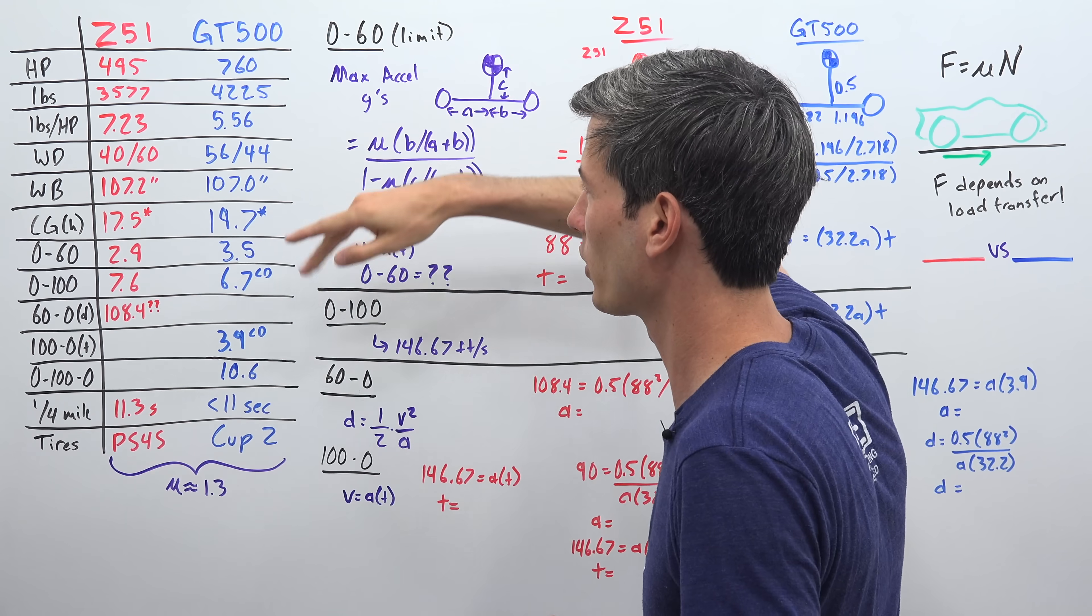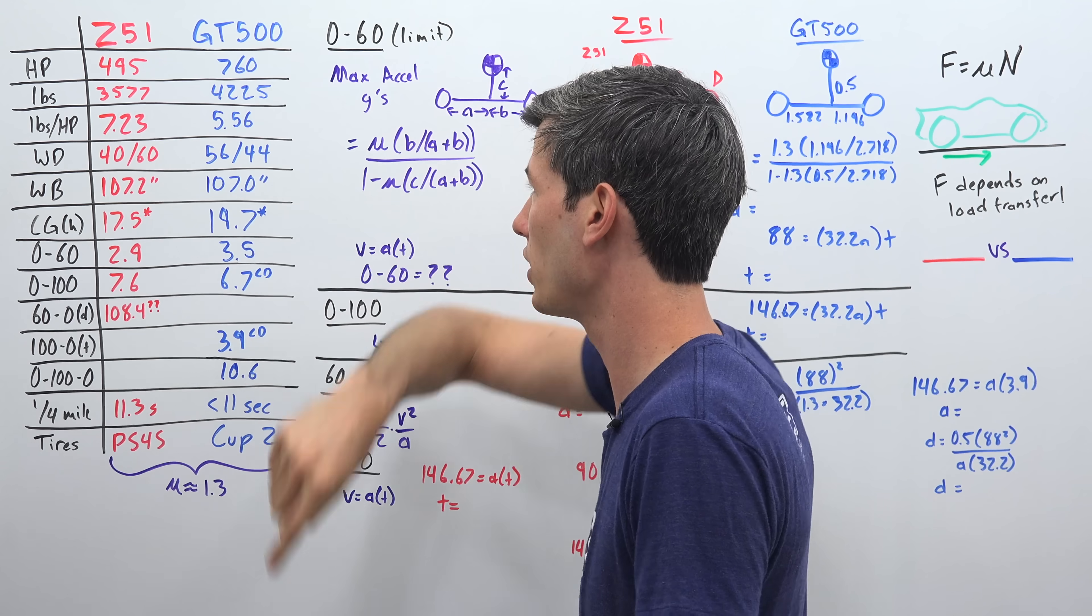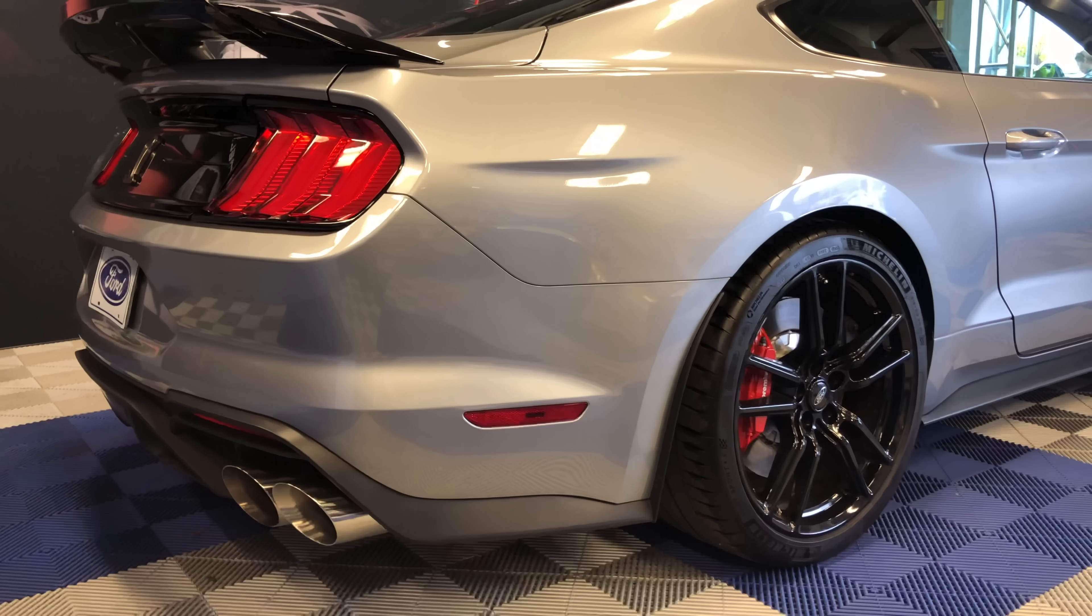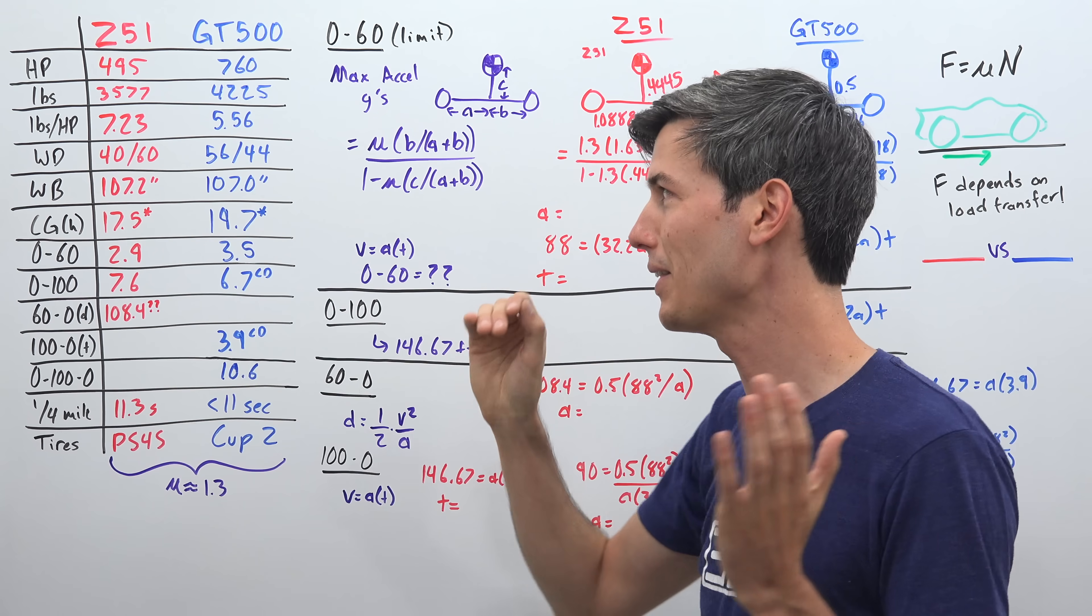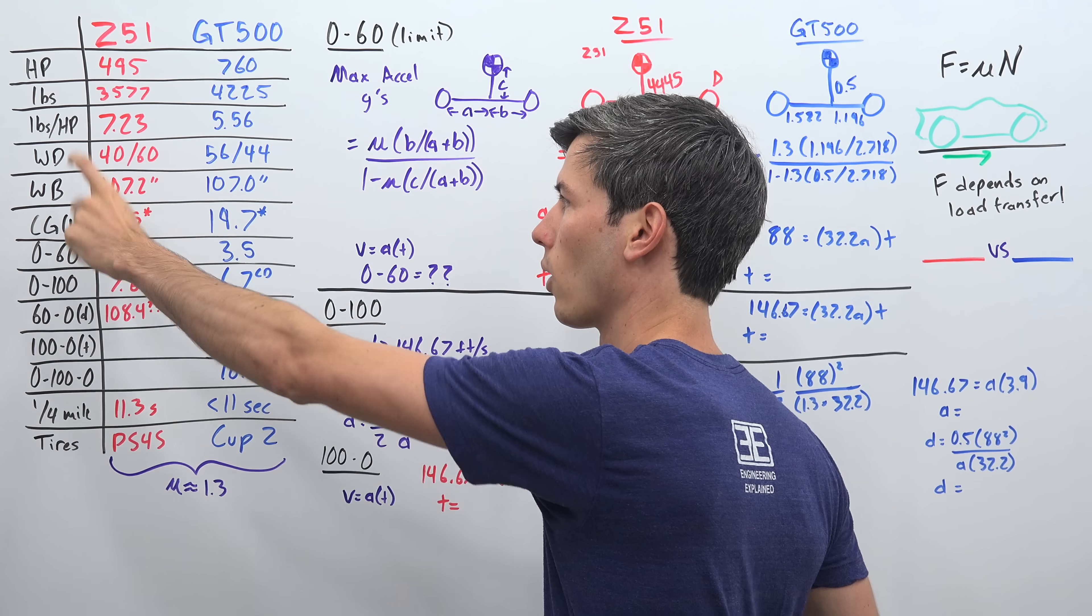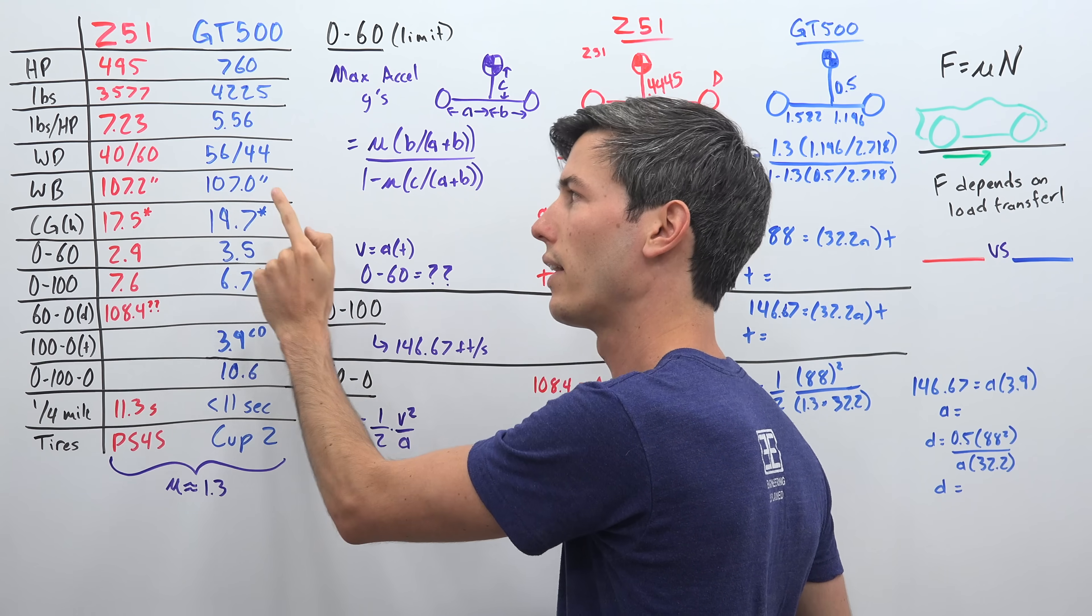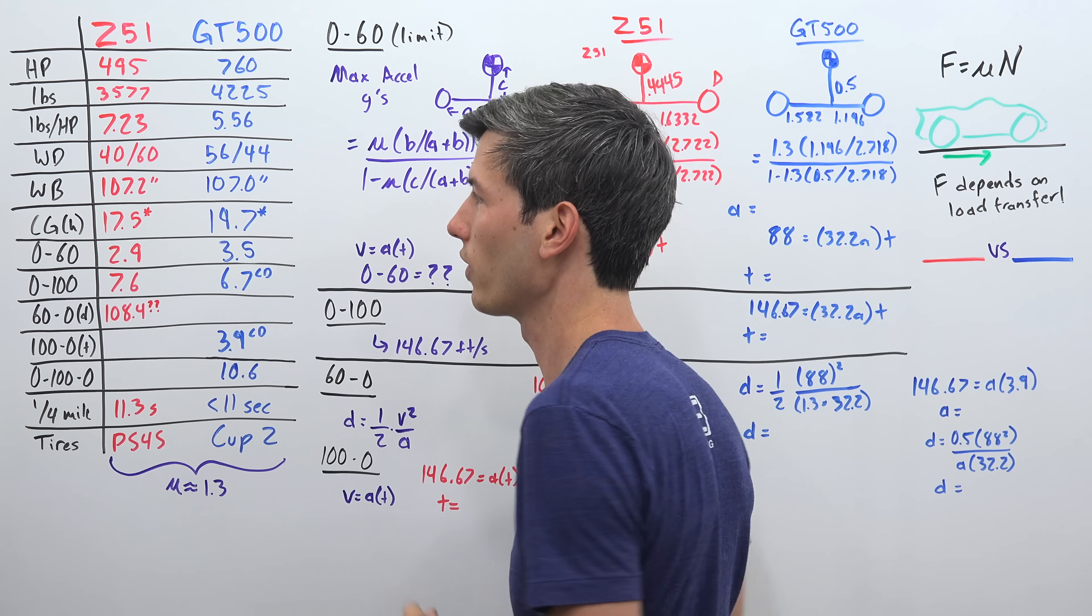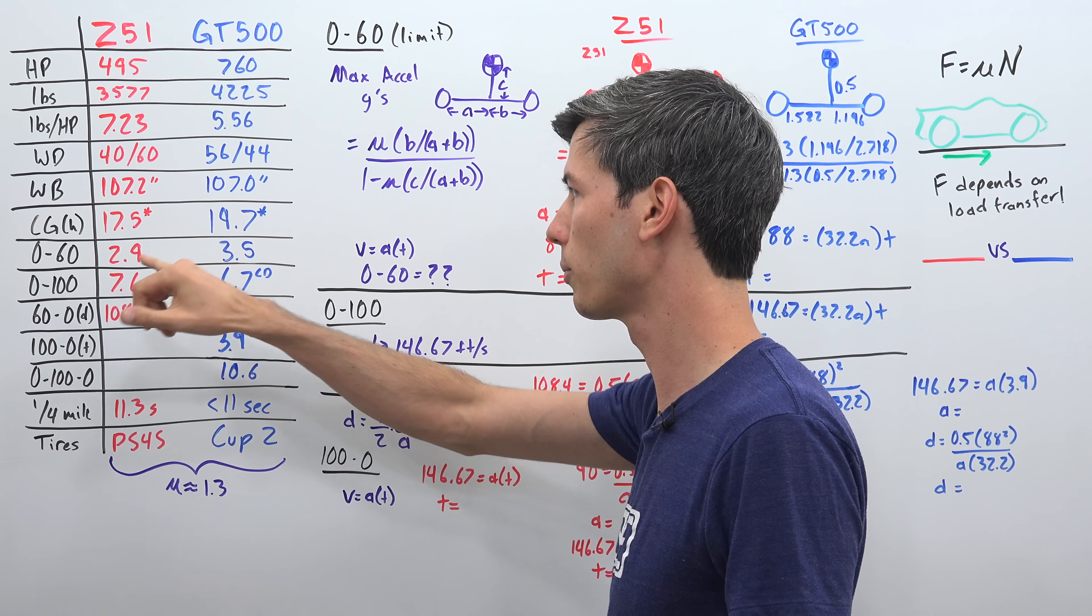So looking through these weight distribution, Z51 40-60 split, so 60% on those rear tires which are driving it versus the GT500 56-44. So only 44% of the weight on those rear tires. Now, is that why this difference occurs? Well, not necessarily. So a vehicle with this weight distribution and rear wheel drive could still out-accelerate a vehicle like this depending on other factors. So it's not going to tell the whole story. Our wheelbase is very similar, both about 107 inches. The center of gravity height, both of these are guesses. This is from the previous Corvette. This is from a little bit higher than the GT350. So I anticipate kind of close enough with these, at least for our guesstimating in this video.